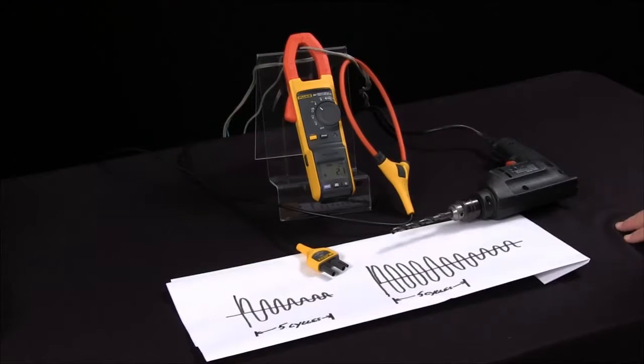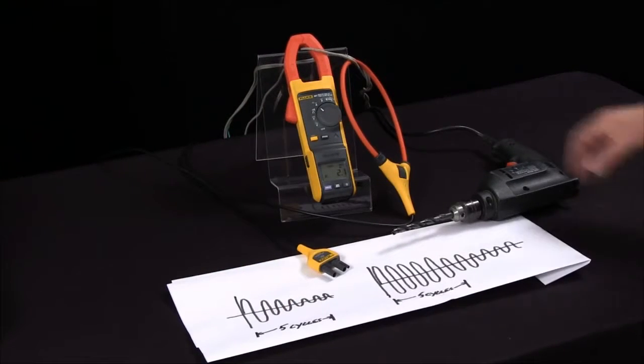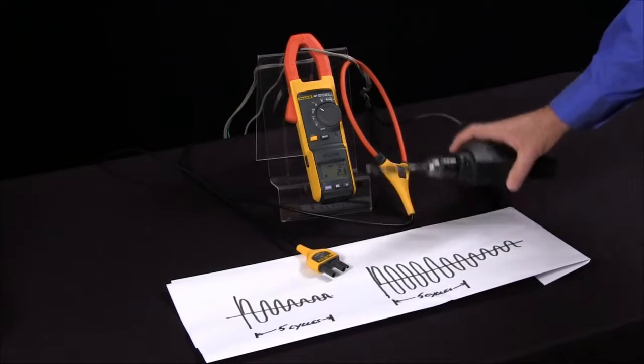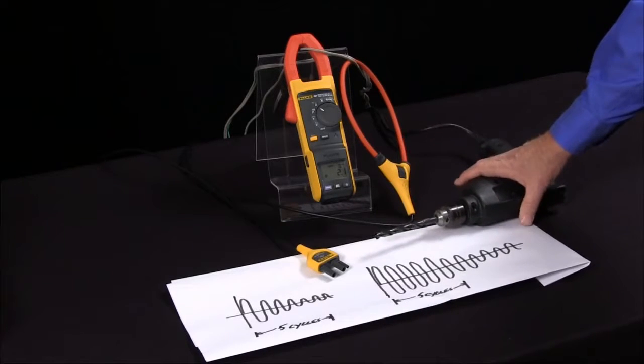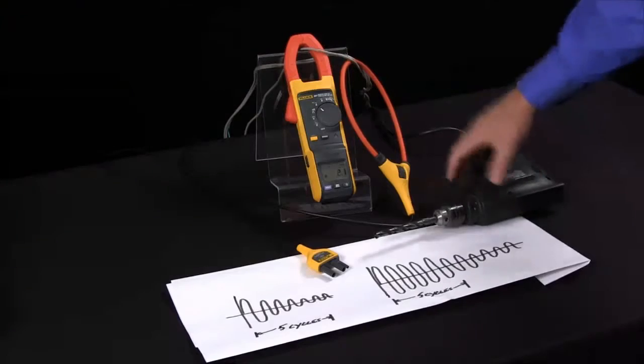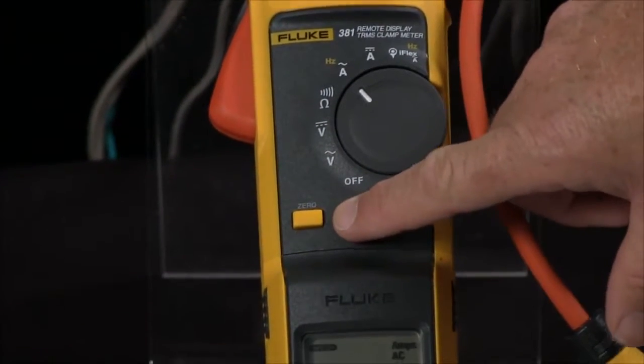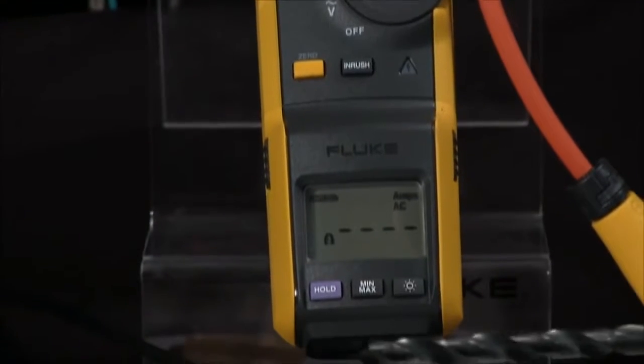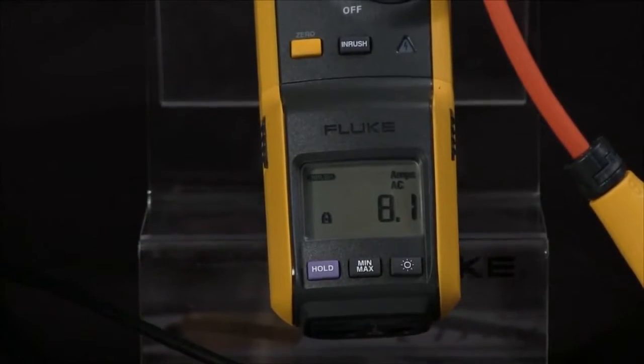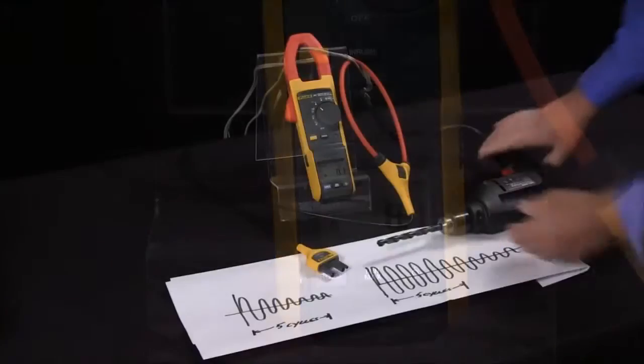How do I measure inrush current with my Fluke 381? To use the 381 to measure inrush current of a motor or other mechanical device, turn it to amps and then press the inrush key. The meter will wait for you to start the motor and will capture the inrush current.